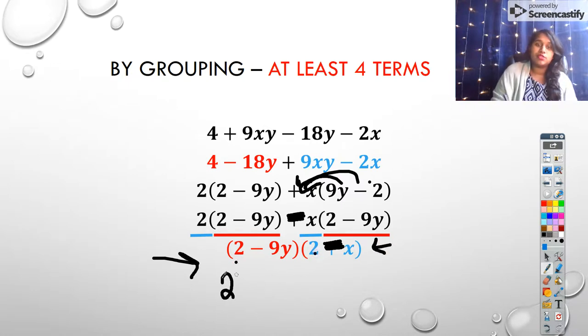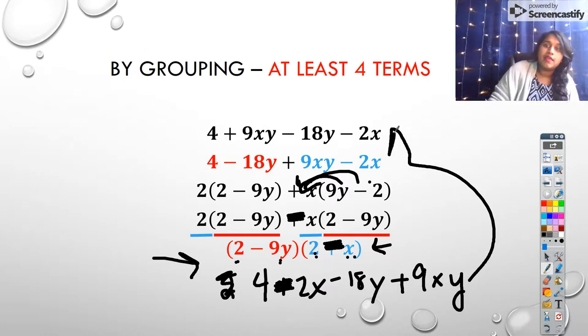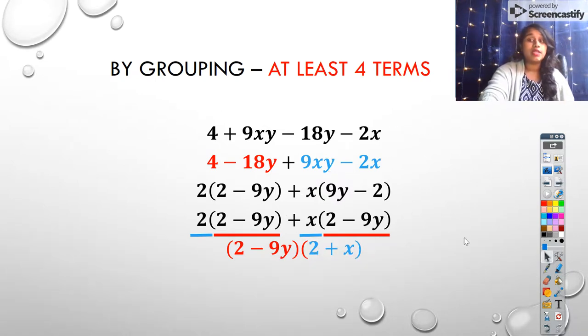So doing our first term, 2 times 2 should have given me 4. 2 times my outer term should have given me negative 2x because this is now negative. My inner terms give me negative 18y and my outer terms now give me a negative times a negative becomes a positive xy. And guess what? That matches back. So again, is it important to test our terms? Absolutely.